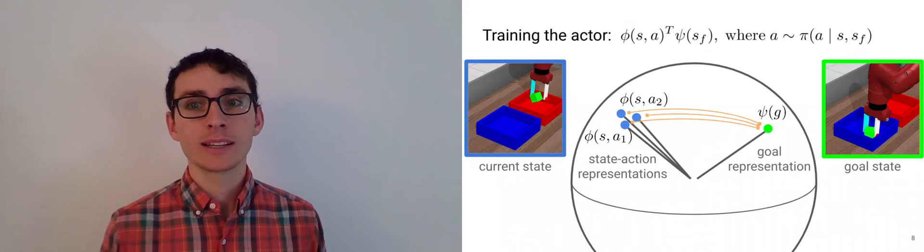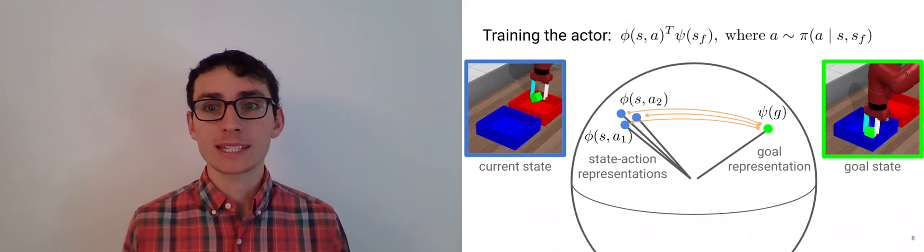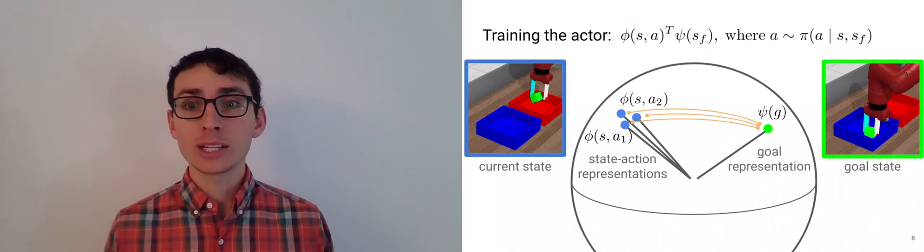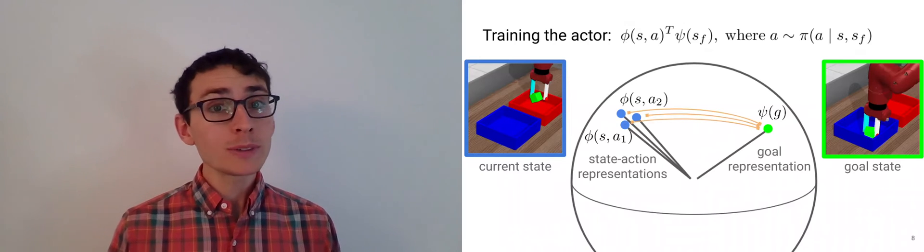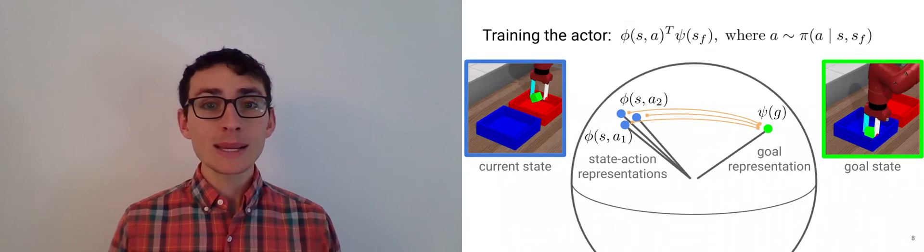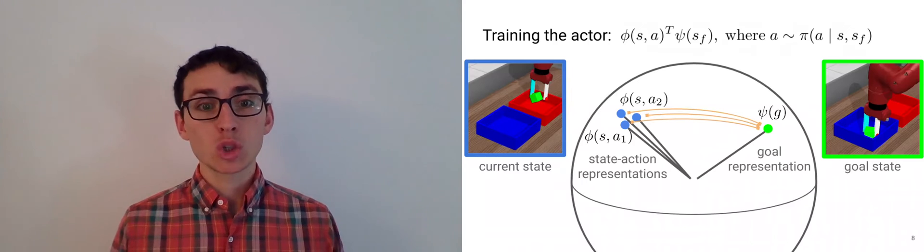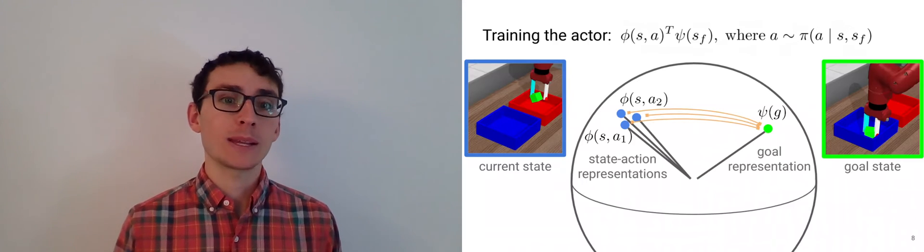Now normally planning is hard. For example, if you greedily tried to solve this task by moving the arm to the goal, then you wouldn't pick up the block. But what we've done by learning these representations is make the planning problem easier. Greedy planning in the representation space is optimal.